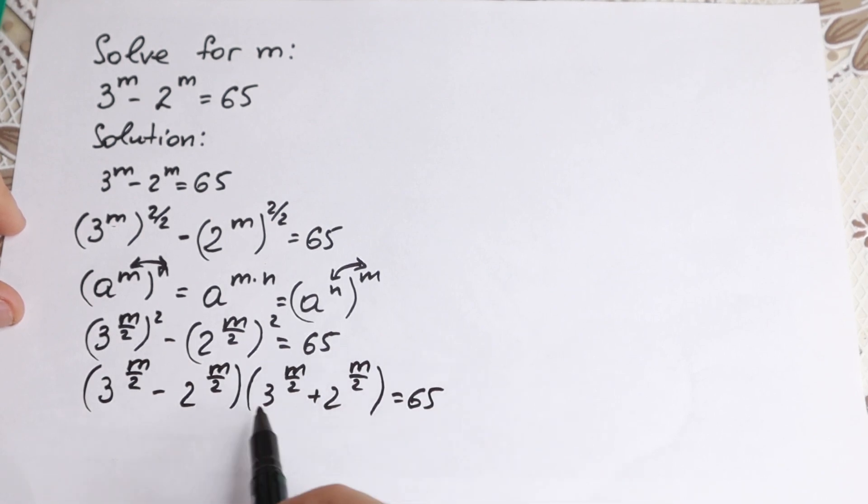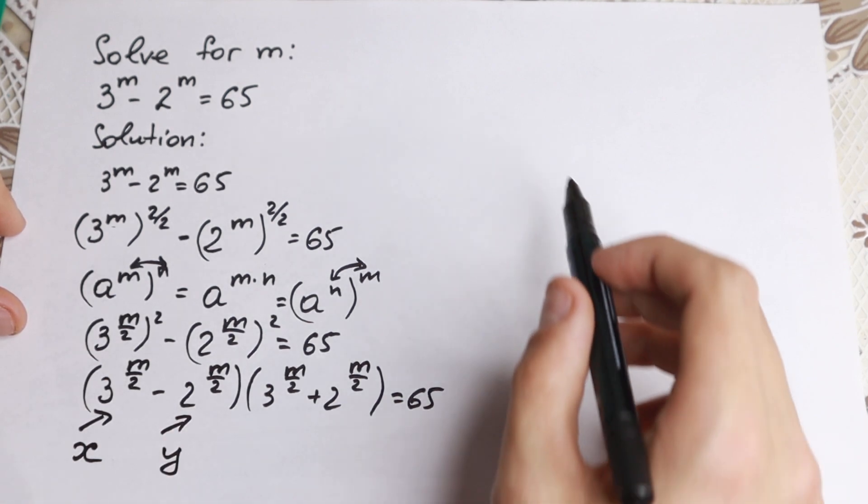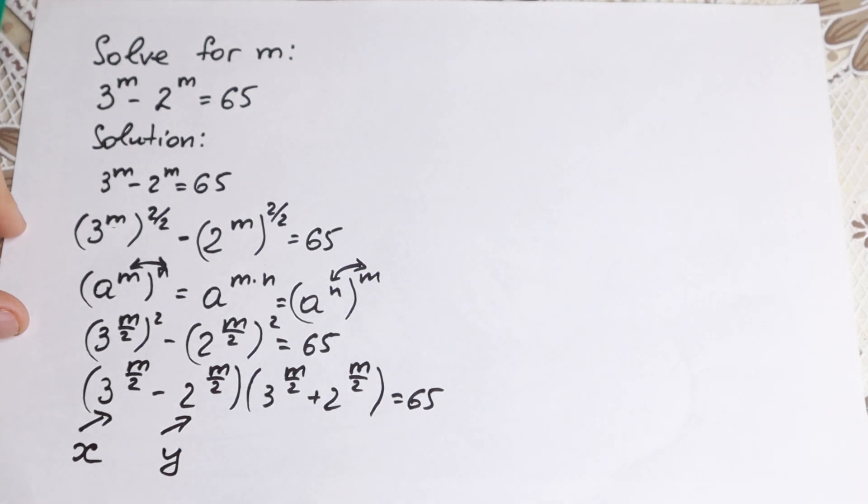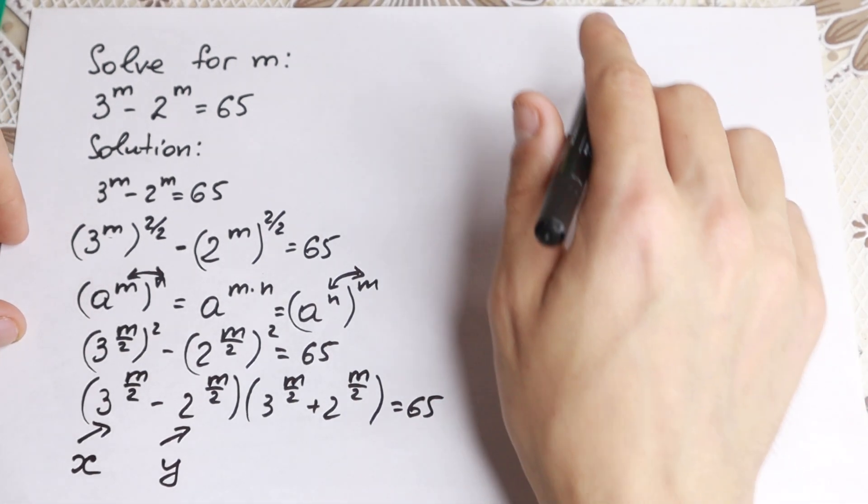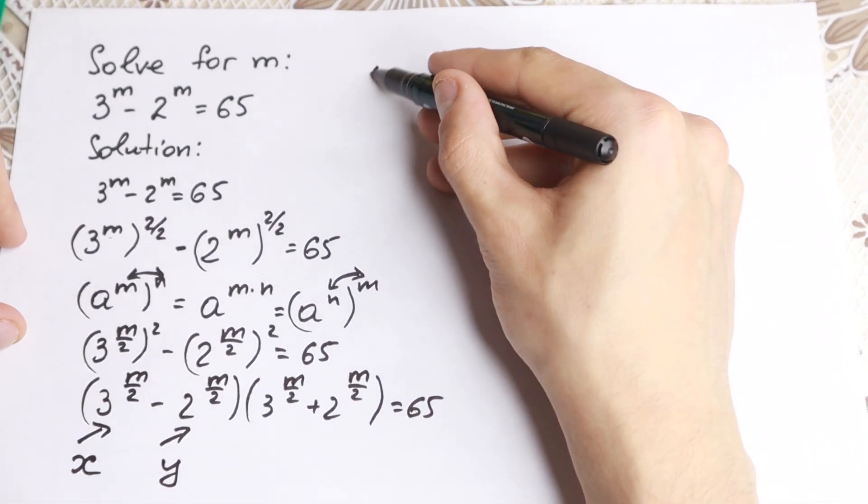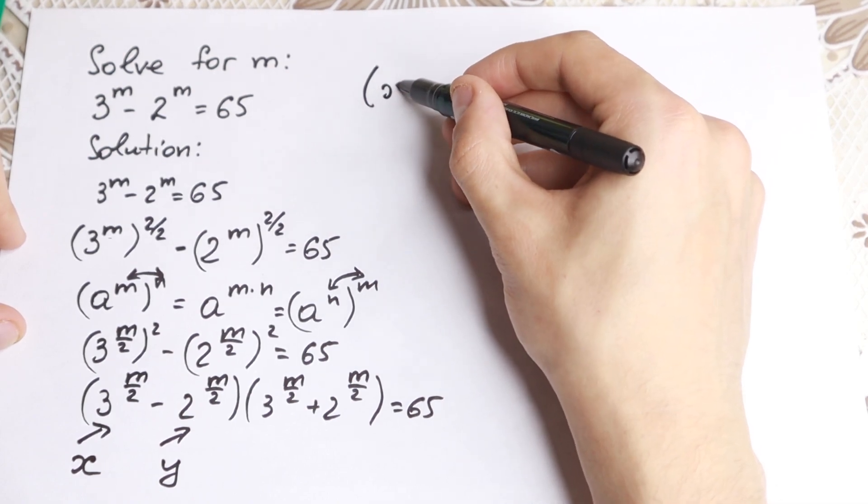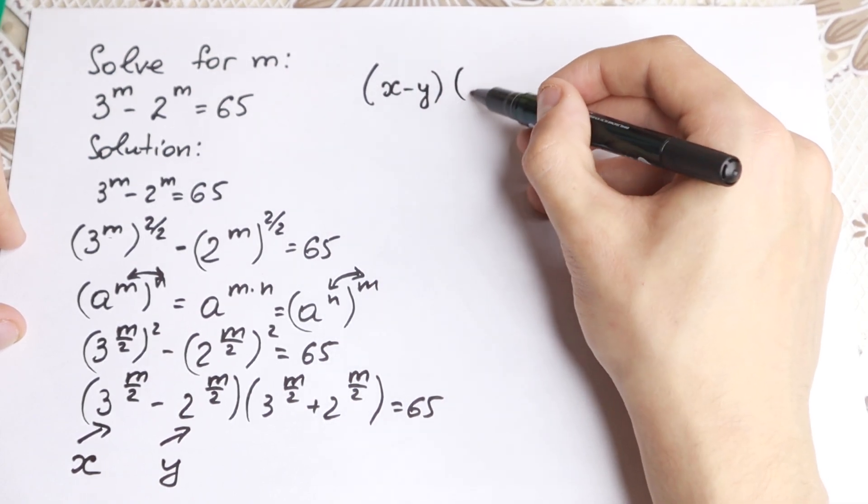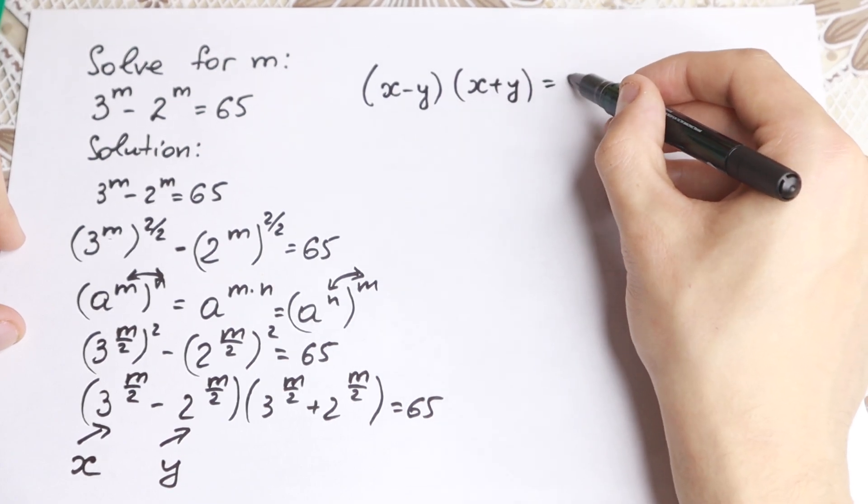It's a little bit hard to work with these elements. So let's use a substitution. This element is our x and this is our y. So what we have as a result? We will have a really interesting equation. Take a look closely. We will have x minus y and x plus y equal to 65.